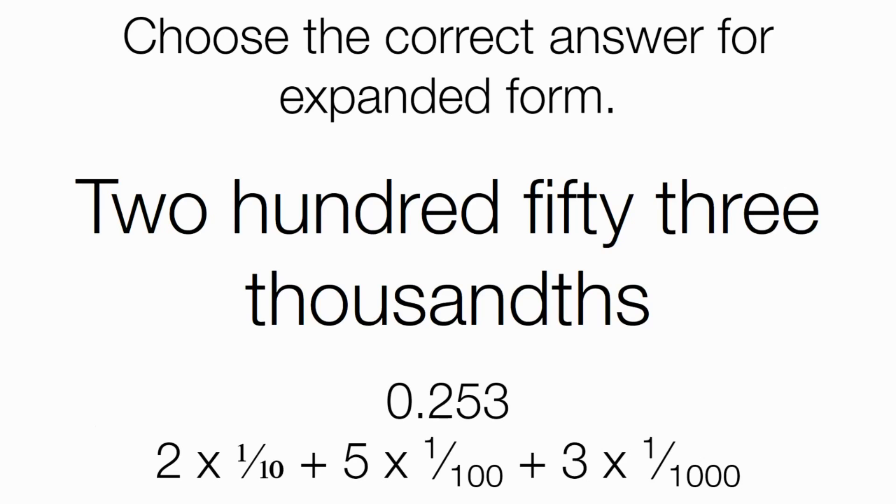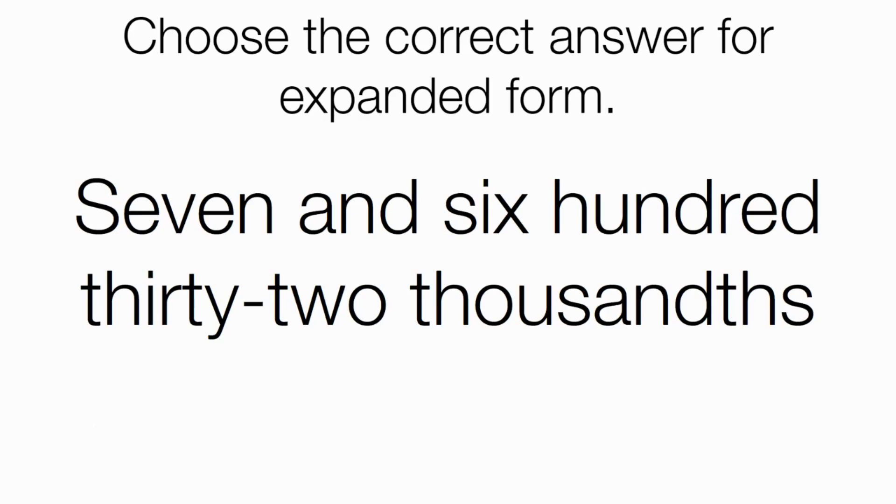And we'll do another one. Again, just please choose the correct answer for the correct expanded form for seven-and-six-hundred-thirty-two thousandths. And the correct form looks like this. So you'll see the number in standard form. There's seven-and-six-hundred-thirty-two thousandths. So I have seven copies of a one plus six copies of a tenth plus three copies of a hundredth plus two copies of one one-thousandth.